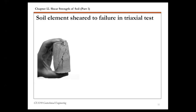I want to start by showing this soil element sheared to failure in a triaxial test. Later in this chapter we'll talk more about triaxial tests and different types. Basically, in a triaxial test, if you have a soil element, you apply some confining stress sigma 3, and then you shear the specimen to failure through an axial loading, sigma 1. This is in terms of total stress, and you can also express triaxial test results in terms of effective stress.